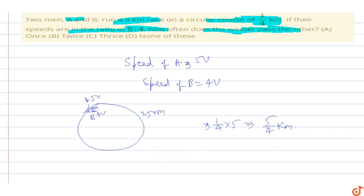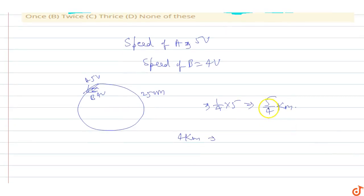The total distance of the race is 4 km. So in 4 km, 5/4 goes 3 times.